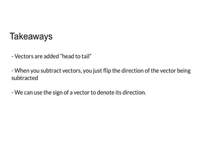So let's talk takeaways. First of all, vectors are added head to tail. Secondly, when you subtract vectors, you just flip the direction of the vector being subtracted, and we saw that in the previous example. And finally, we can use the sign of a vector to denote its direction, as long as we show somewhere in the picture which direction is positive and which one is negative.